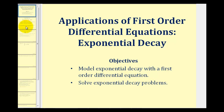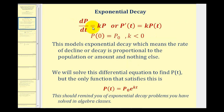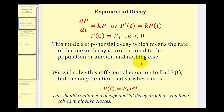Welcome back for more applications of first order differential equations. In this video we'll cover exponential decay. The differential equation dp/dt equals k times p, or p prime of t equals k times p of t, models exponential decay, which means the rate of decline or decay is proportional to the population or amount, and nothing else.